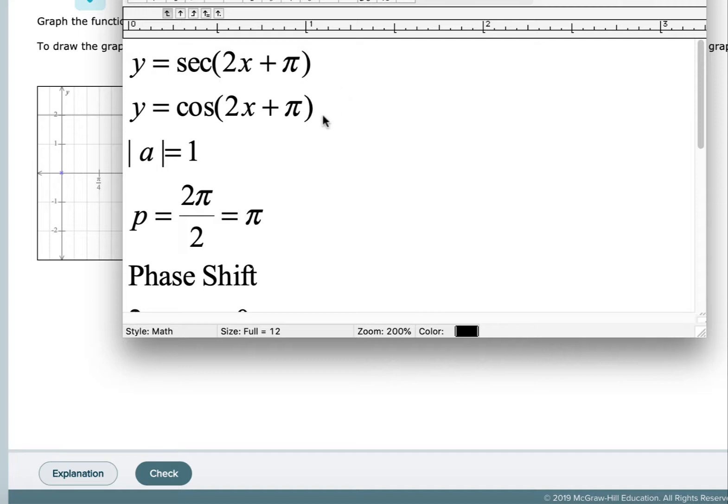And then what I'm going to do is write what I call the companion graph. The companion graph means I'm just going to replace the secant with its reciprocal, which is cosine. The 2x plus π still remains the same.